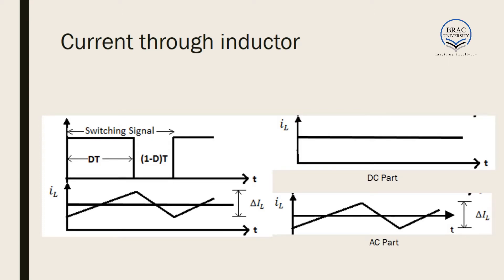Before we move on to the discussion of filter capacitors, we first have to look at the value of the current through the inductor. The current through the inductor follows a zigzag pattern — in one half of the cycle it rises, in the other half it falls. This zigzag pattern will have a mean value, so the inductor current will have a DC part which is fixed and an AC part.